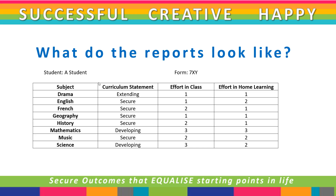Students will get their Key Stage 3 report in the spring two and summer two half terms, and they will look similar to the example shown here. We have a new system for reporting which is not yet fully set up, so we are aiming to send something that looks roughly like what you can see here. There are three main parts to reading the table: the curriculum statement for each subject, the effort grade for effort in class, and the effort grade for effort at home. There will be more subjects than just the few shown in this example.